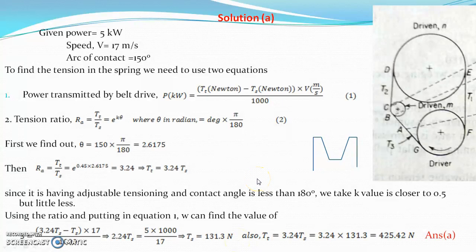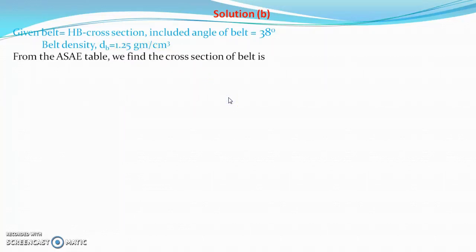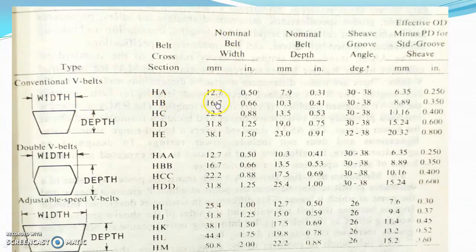Now we go to the second part. The given data includes the belt cross section as HV, with an included angle of 38 degree, and belt density of 1.25 gram per centimeter cube. From the SAE table, there are standard cross sections. For HV cross section, the top width is 16.7 millimeter and belt depth is 10.3 millimeter. The groove angle range is 30–38 degree, and the problem gives 38 degree. So we take width A = 16.7 mm and height H = 10.3 mm.